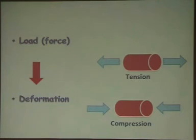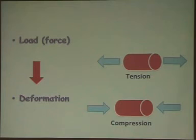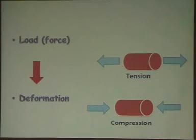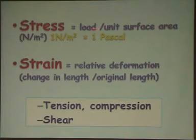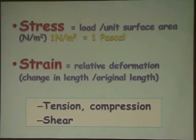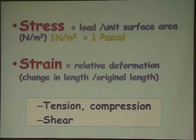When we apply load to any structure, it will produce deformation. However, to describe loading for a specific material, we should not use the terms load and deformation, because load-deformation relationships are dependent on the size of the studied structure. Therefore, we replace these with stress and strain: stress means load per unit surface area, and strain means relative deformation — that is, the change in length divided by the original length. Using stress and strain allows us to specify the biomechanical characteristics of a material independent of its size.